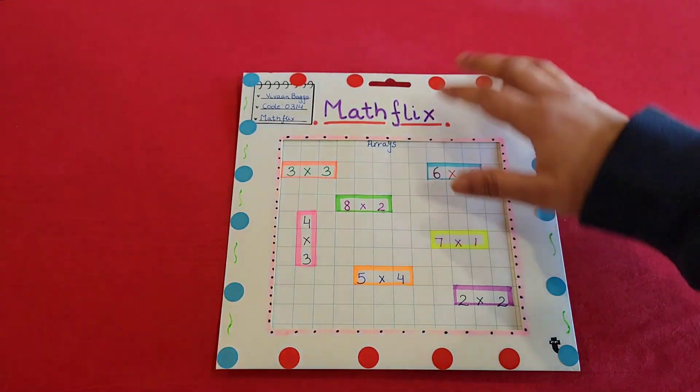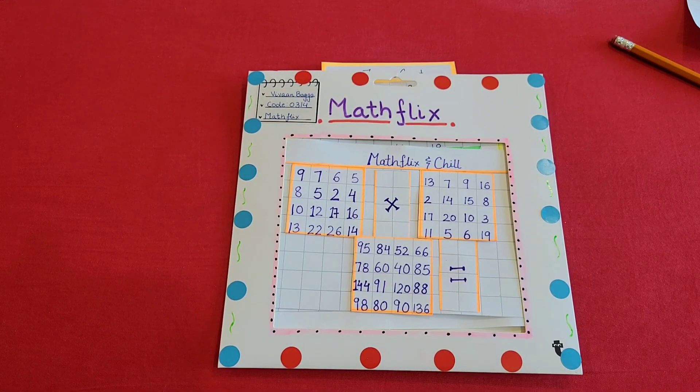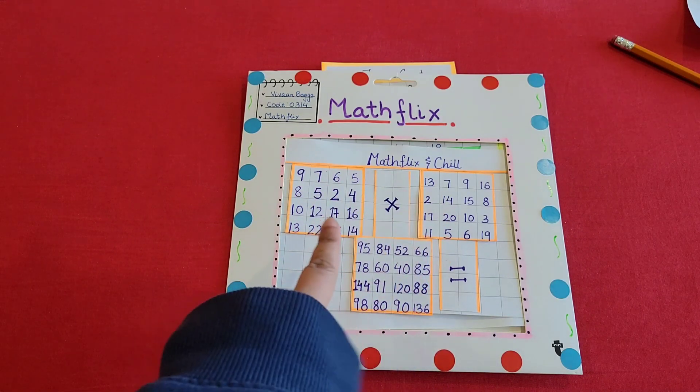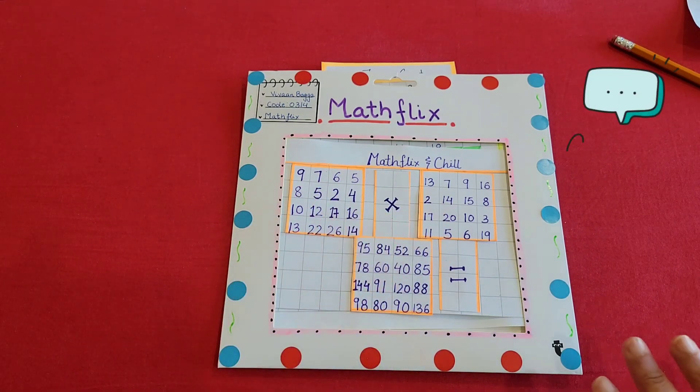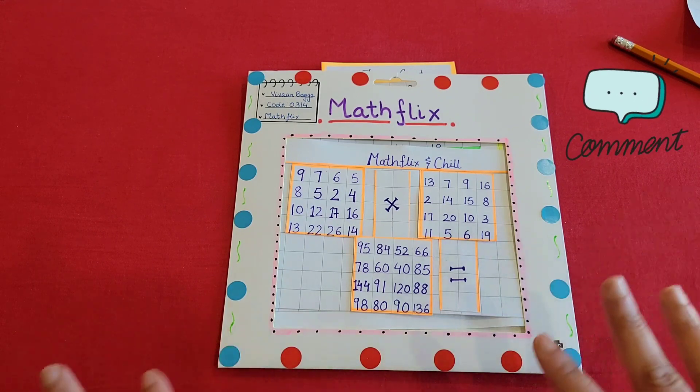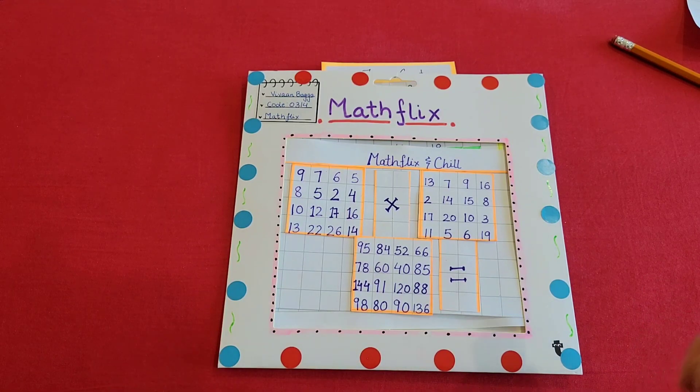All right guys, the second activity in Math Flix is Math Flix and Chill. I have used a grid paper here and there are two grids that you can see. There are different numbers here and the third grid here which says multiplication sign. So it could be a perfect team game where either two kids or a parent and a kid have two different colors.